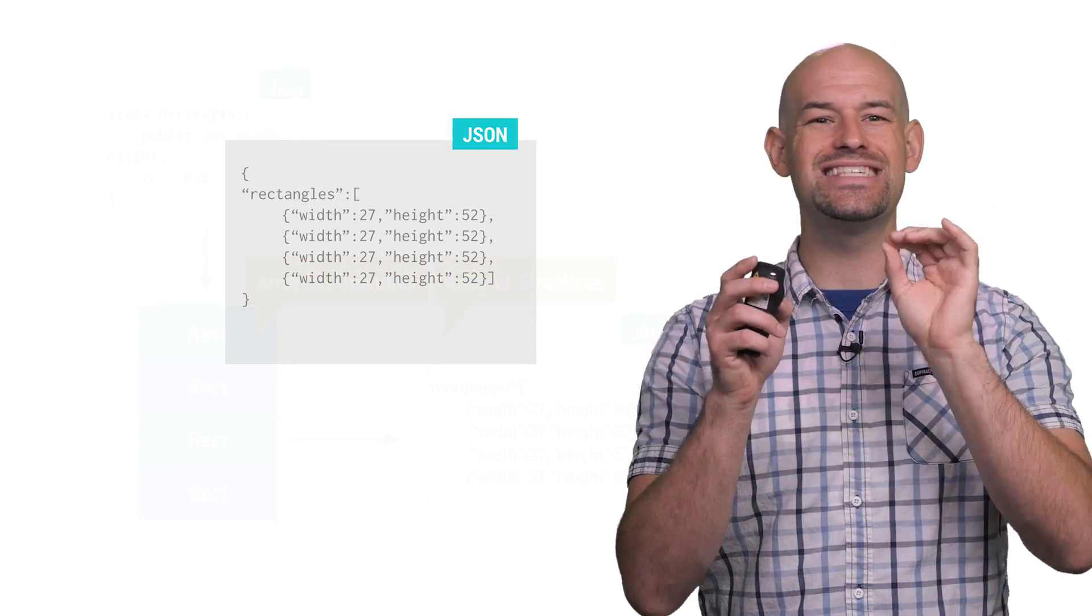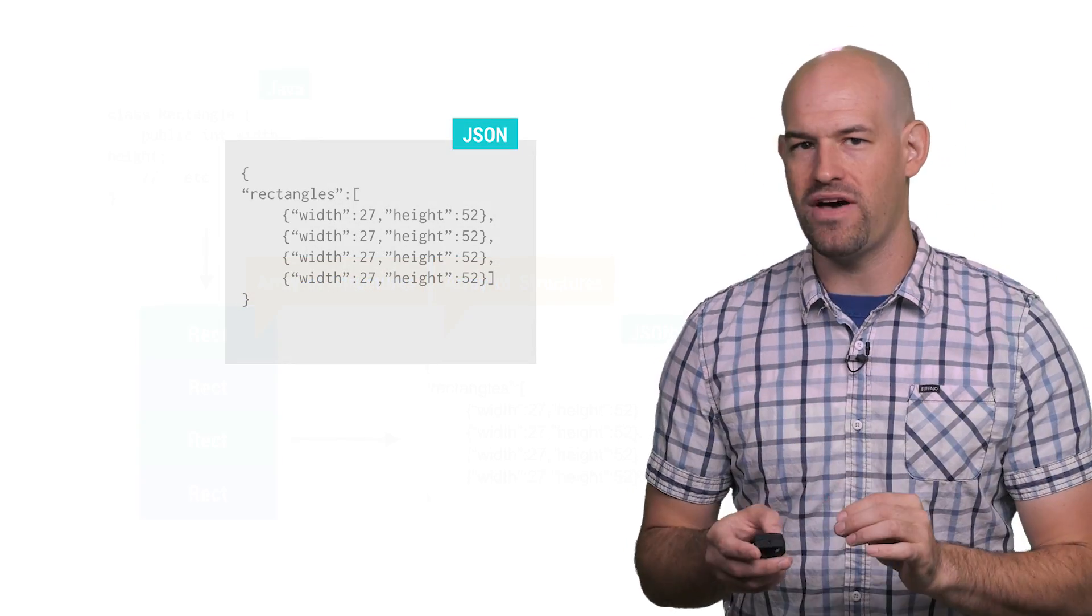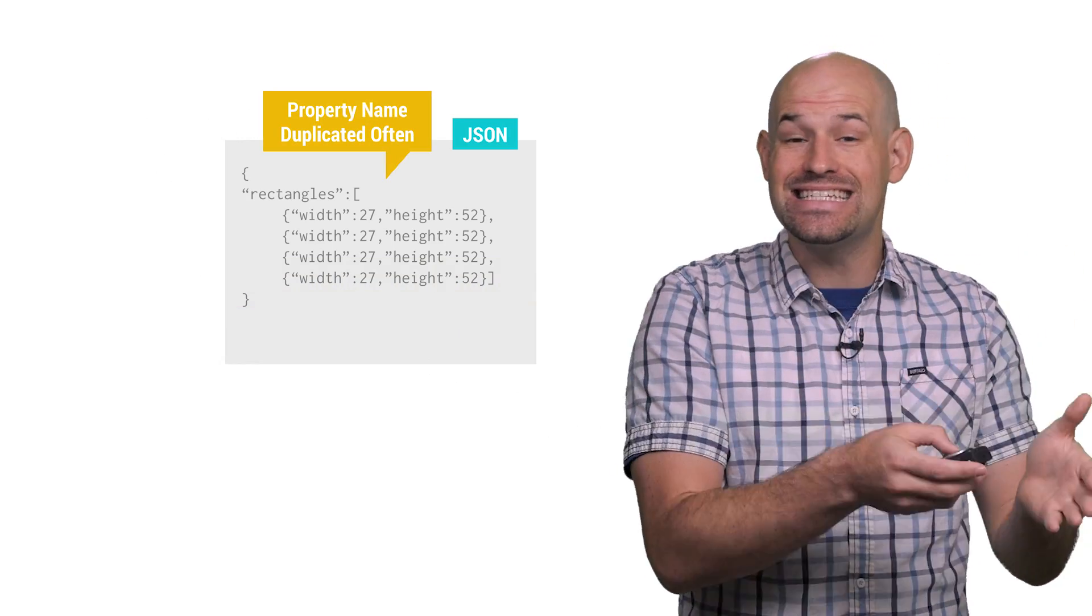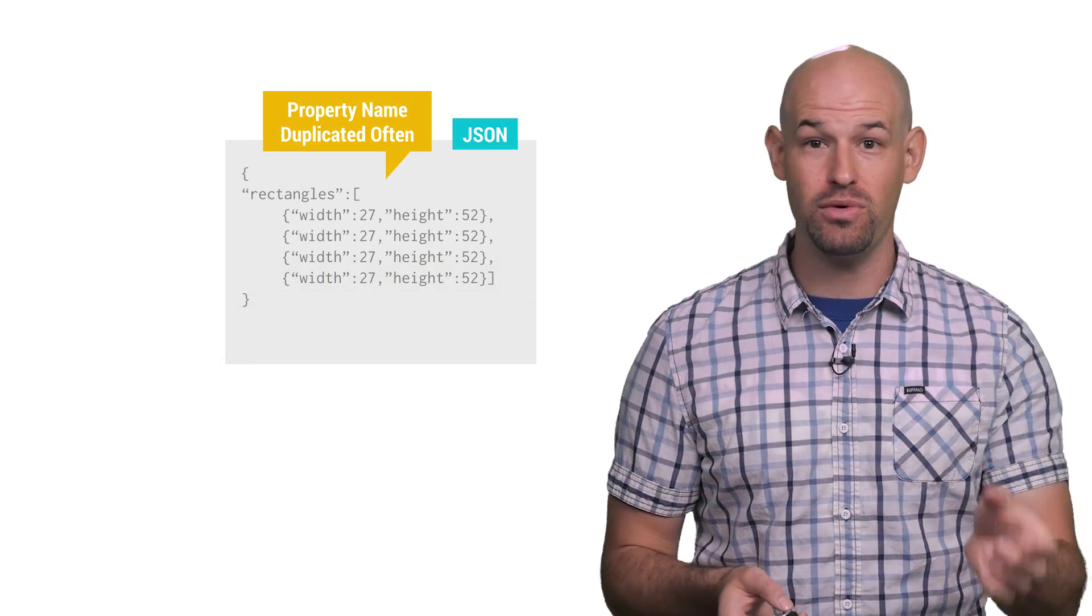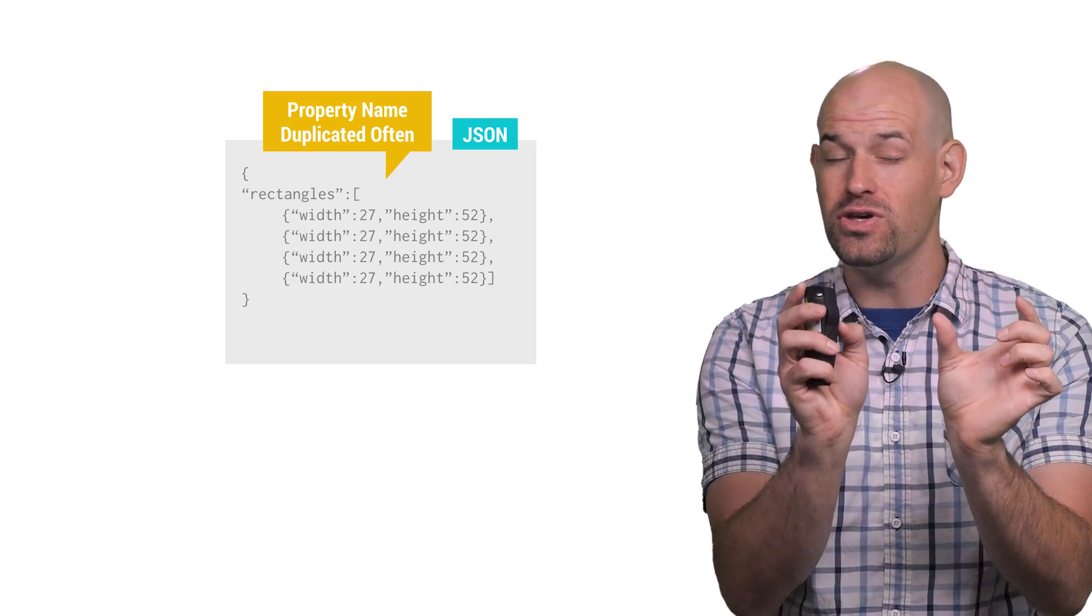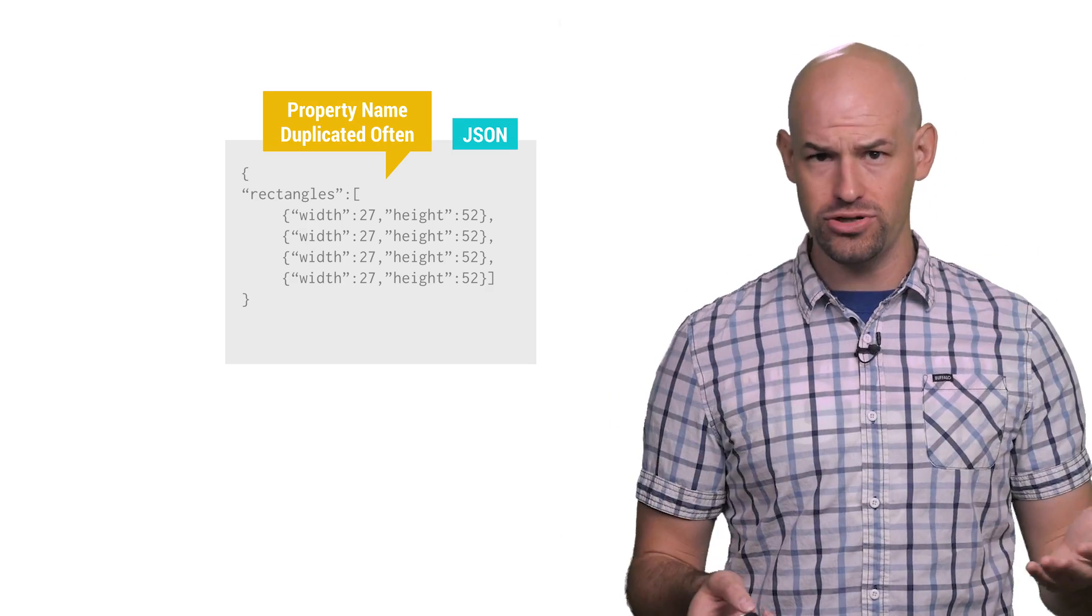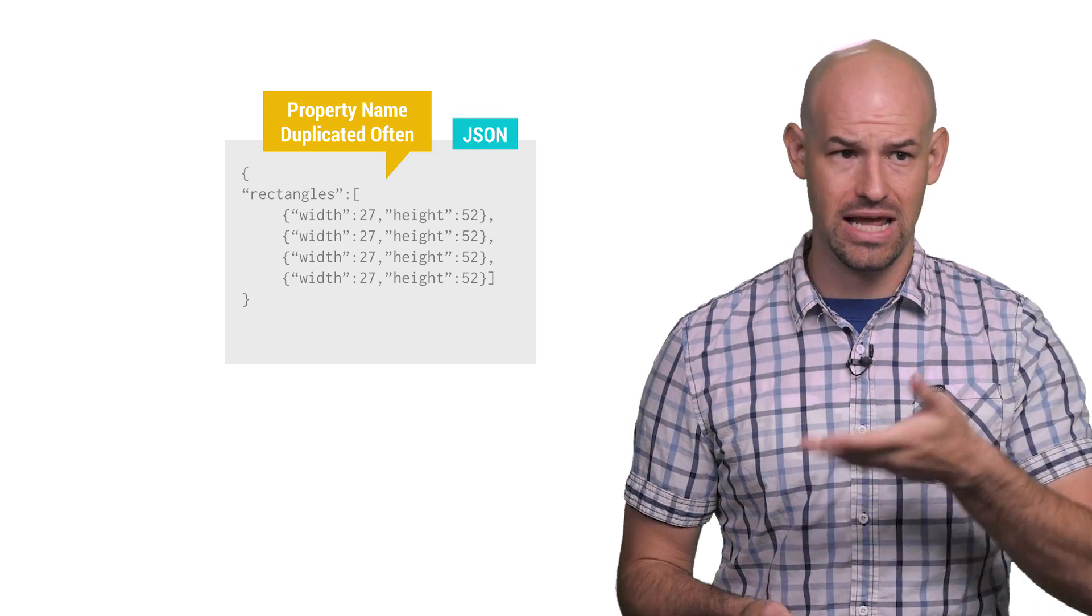First, consider that in the serialized form, each member value must generally be declared with its property name, meaning that for each instance of your class, every property will have the full property name as well as the value declared in the serialized file. So obviously your file is going to be larger as a result of all these redundant property names just sitting around.